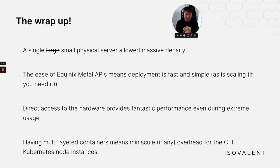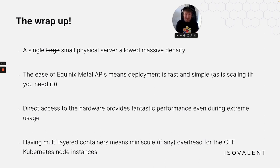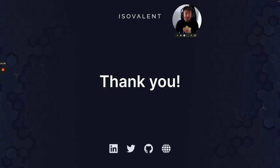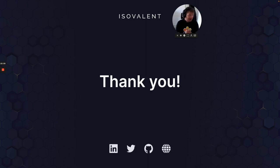Wrap up: a single small physical server allowed for massive density. The Equinix Metal API made deployment super fast and simple — for scaling, if we'd have needed it. Direct access to the hardware provided fantastic performance and incredible capacity. Multi-layered containers meant minuscule overhead for the Capture the Flag Kubernetes node instances. We've been running it continuously since, with fantastic feedback and everybody enjoying fixing broken clusters. Thank you very much — I'll see you all next time.